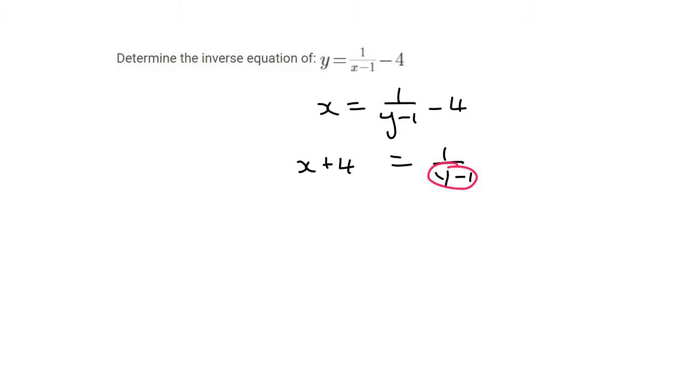What you can then do is take this y minus 1, multiply it across, but in a specific way. Keep it all in brackets, like this. There we go.